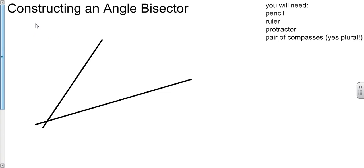Hi there, in this video we're constructing an angle bisector, and that means that when we're finished, we want a line that perfectly splits this angle in half. So whatever this angle turns out to be, we want to get a line that splits it perfectly in half.